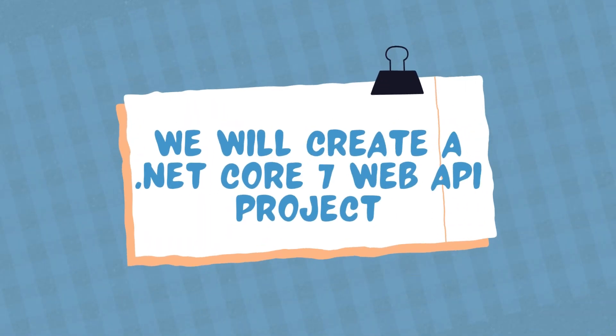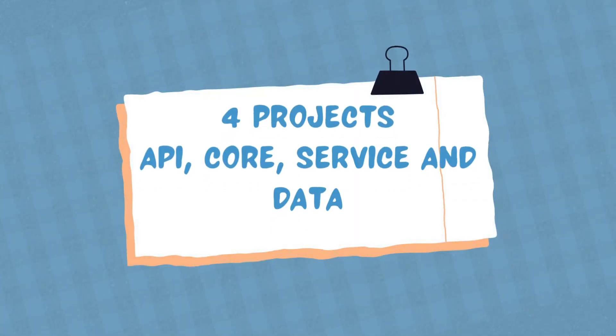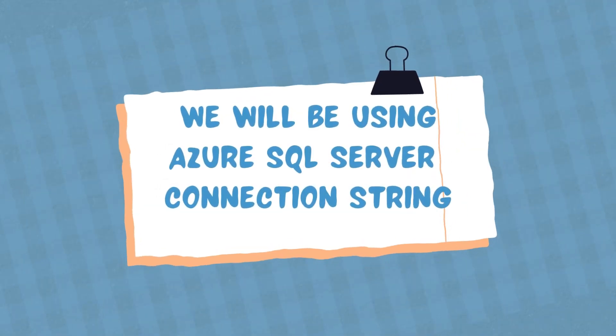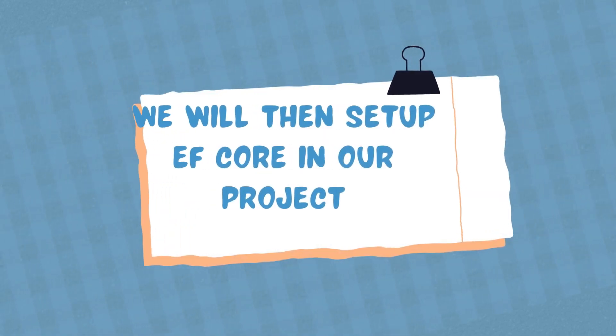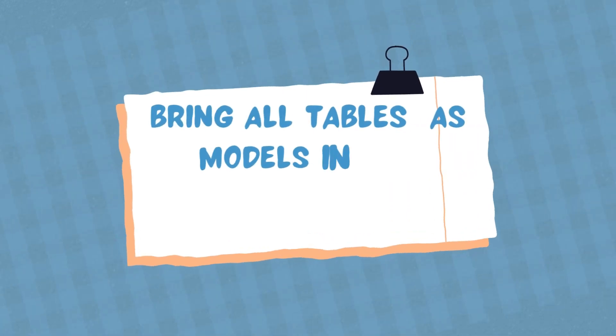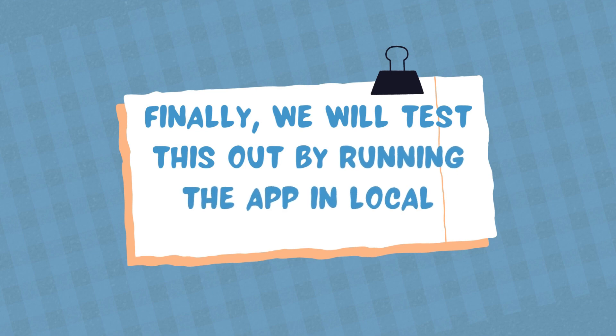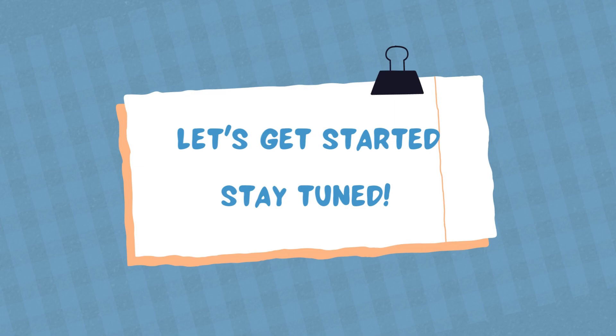In this video I will be covering creating a new .NET Core 7 Web API project, and then we'll use a four-layered architecture: the API project, core project, data project, and service project. With these we'll be using the SQL Server connection string from the previous video, setting up Entity Framework Core. We'll also use the .NET CLI scaffold command to create models based on the database, and get the project up and running so everything is connected and works. Come, let's dive in.